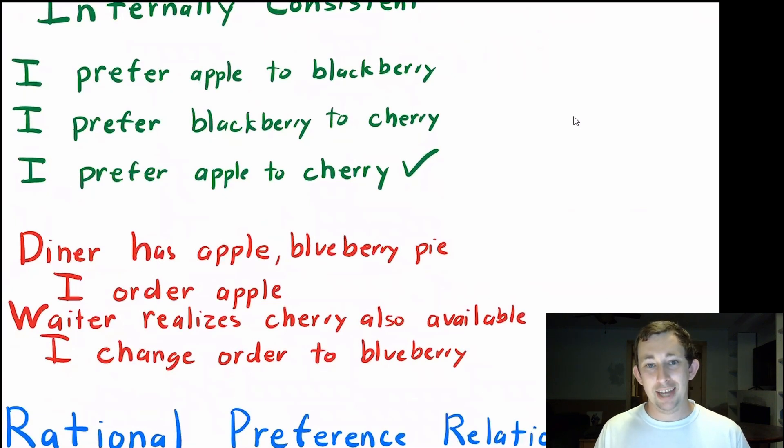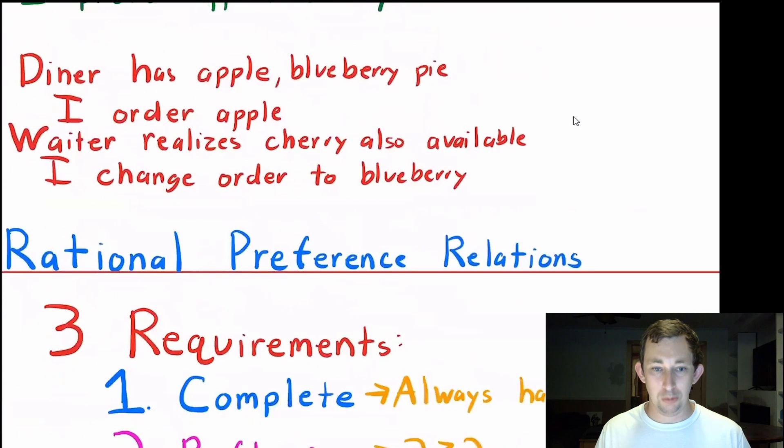And you're like, why in the world would you not choose blueberry when it was an option before? And now all of a sudden, this third option makes you change to something that was available before, and you didn't pick it. So that's what it means to not be transitive. And I think it's important to have an example of when it violates transitivity in your head as well.